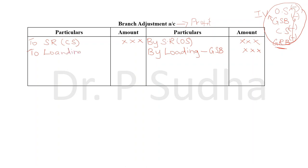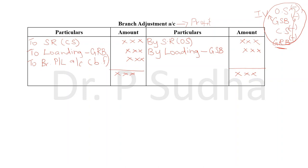For goods returned by branch, we calculate the loading and record it on the debit side. Finally, tally the account. You will have one balancing figure, and that balancing figure will be transferred to branch profit and loss account. So in summary, we calculate stock reserve on opening stock and closing stock, and loading on goods sent to branch and goods returned by branch, recording each on the opposite side to reduce the respective values.